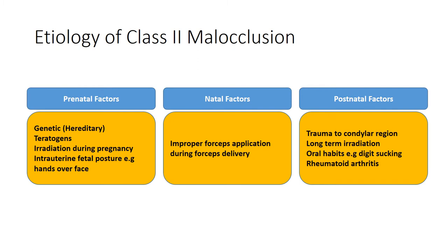The etiology of class 2 malocclusion can be broadly divided into three groups: prenatal, natal, and postnatal factors. Prenatal factors include genetic or hereditary factors, teratogens, irradiation during pregnancy, and intrauterine fetal position — for example, if the hands of the fetus lie over the face and impede mandibular development. Natal factors involve improper forceps application during delivery. Postnatal factors include trauma to the condylar region, long-term irradiation, oral habits like digit sucking, and rheumatoid arthritis.